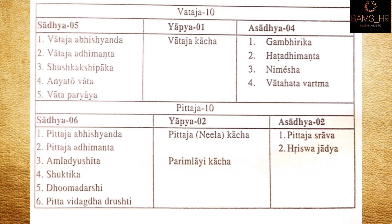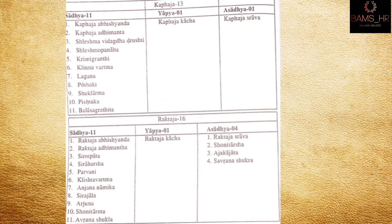Kaphaja netrarugas are 13, of which sadhya are 11: kaphaja adhimantha, kaphaja vishandha, shushkaji vishandha, shushka ninja vidakadvesthi, shushka upanaha, krimigranthi, klindavartma, lagana, putaki, shuklarma, pishtika, pishtaka. Yapya 1: kaphaja kacha. Asadhya 1: kaphaja srava. In general, all kachas are yapya.